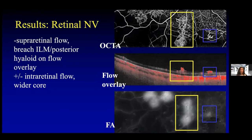What about retinal neovascularization? The features we noted were supraretinal flow that has breached the ILM and might even extend into the posterior hyaloid on flow overlay. Here on the upper right, the OCTA in the yellow square shows retinal neovascularization, as well as the blue square. On the flow overlay, the flow has breached the ILM, and the fluorescein angiogram below corresponds to retinal neovascularization.